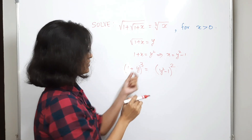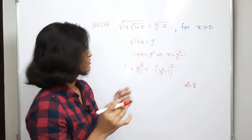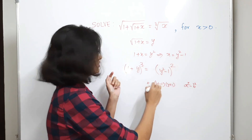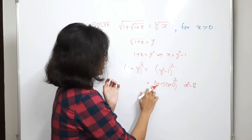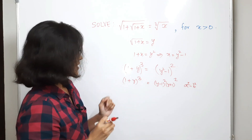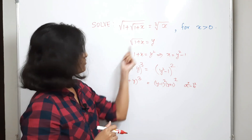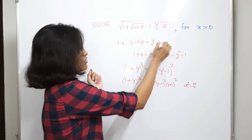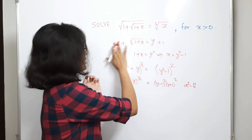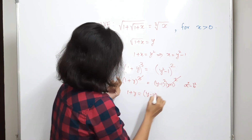Now we can apply the formula for a squared minus b squared: that is (a-b)(a+b). So we write y squared minus 1 as (y-1)(y+1), then take the square, giving (y-1)² times (y+1)². Since y equals the square root of 1 plus x, we take the positive square root, so y plus 1 is a positive, non-zero quantity. We can cancel (y+1)² from both sides, leaving: 1 plus y equals (y-1)².